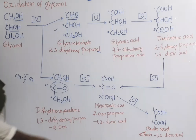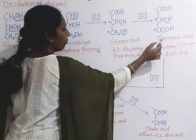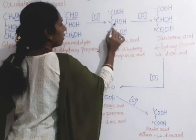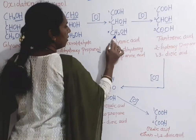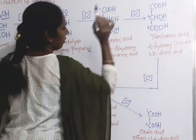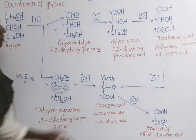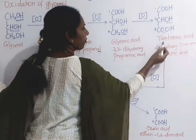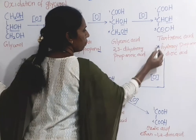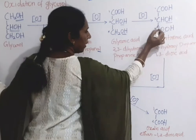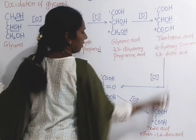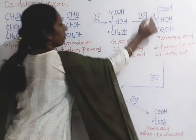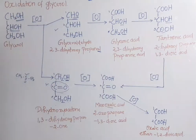In the next step, glyceric acid undergoes oxidation to form tartronic acid. Here one acid group is already present, and the alcohol (CHOH) is oxidized to form another acid group. The IUPAC name is 2-hydroxypropane-1,3-dioic acid — on the second carbon there is a hydroxy group, and there are two acid groups at positions 1 and 3, hence 'dioic acid'.